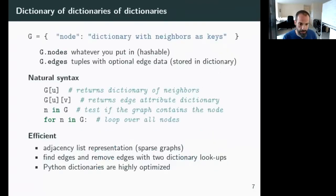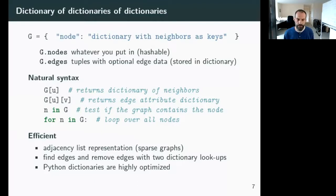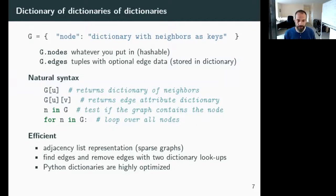Our graphs are basically dictionaries indexed by nodes, where the values are dictionaries with neighbors as keys. The syntax is natural: G[u] returns a dictionary of neighbors for node u; G[u][v] returns the edge attribute dictionary for edge UV. You can ask whether a node is in the graph with `u in G`, and loop over nodes with `for node in G`. It's an adjacency list representation, which works well for sparse graphs — which many naturally occurring graphs are.